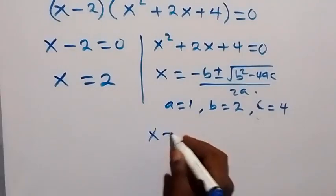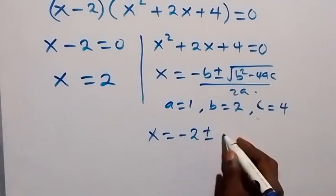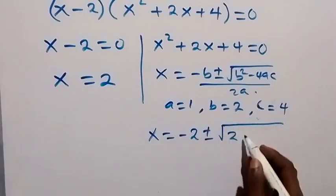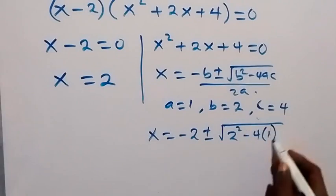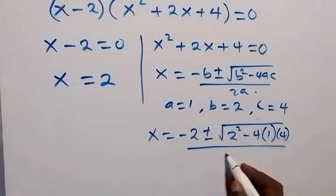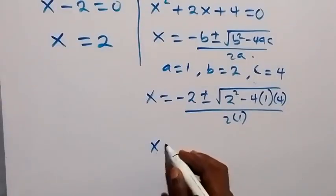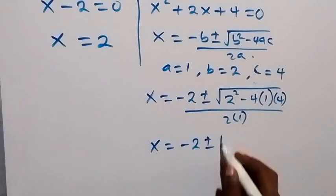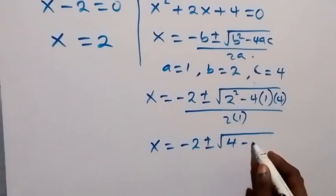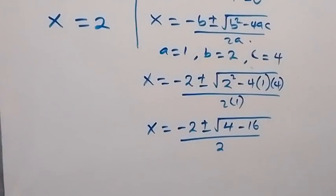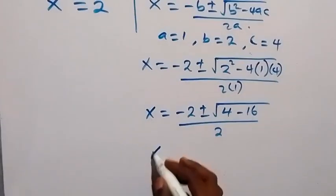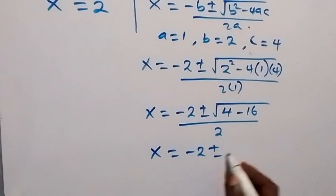Then solving from here, we have x equals to minus 2 plus or minus square root of 4 minus 16 over 2. 4 minus 16, here we have minus 12. And that's x equals to minus 2 plus or minus square root of minus 12 over 2.